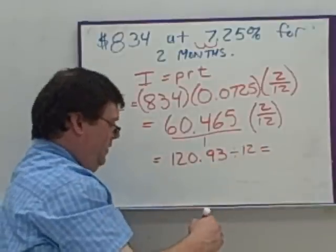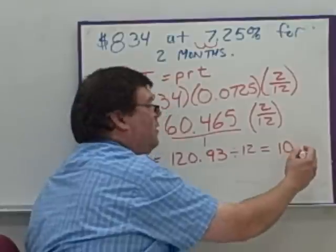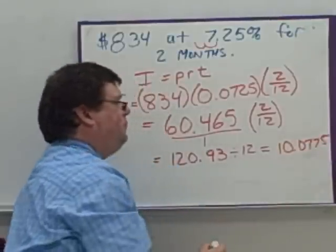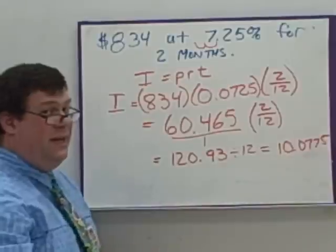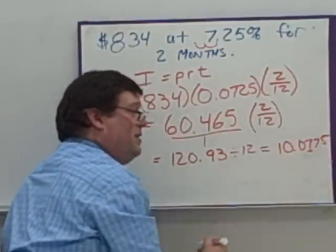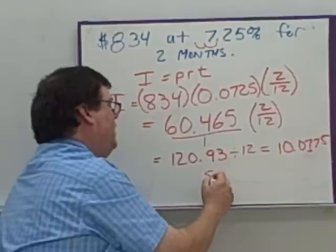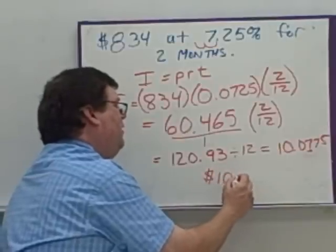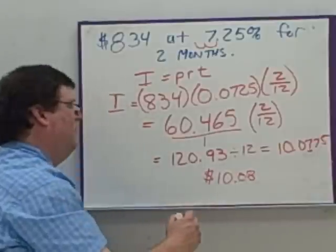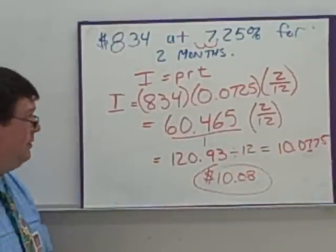120.93 divided by 12 gives me 10.0775, which, since we're talking about money, we round to two decimal places. We get $10.08, and that's our final answer for the interest on that one.